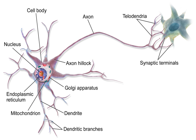Demyelination is the loss of the myelin sheath insulating the nerves. When myelin degrades, conduction of signals along the nerve can be impaired or lost, and the nerve eventually withers. This leads to certain neurodegenerative disorders like multiple sclerosis and chronic inflammatory demyelinating polyneuropathy.